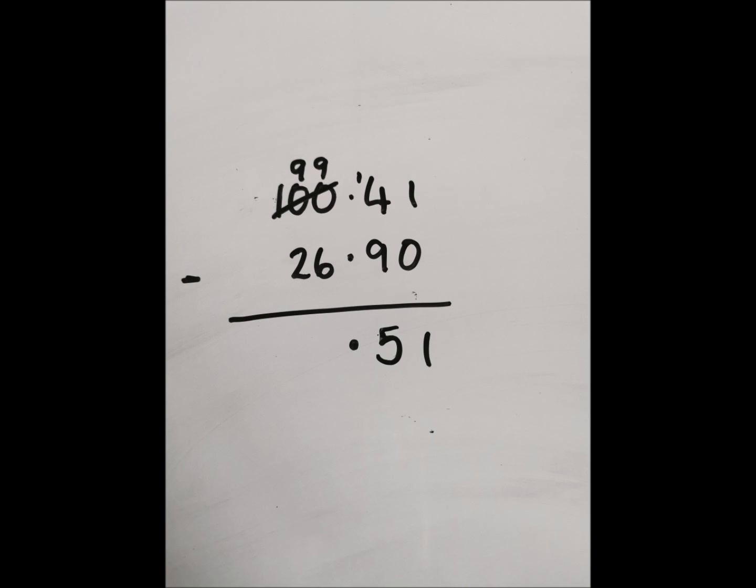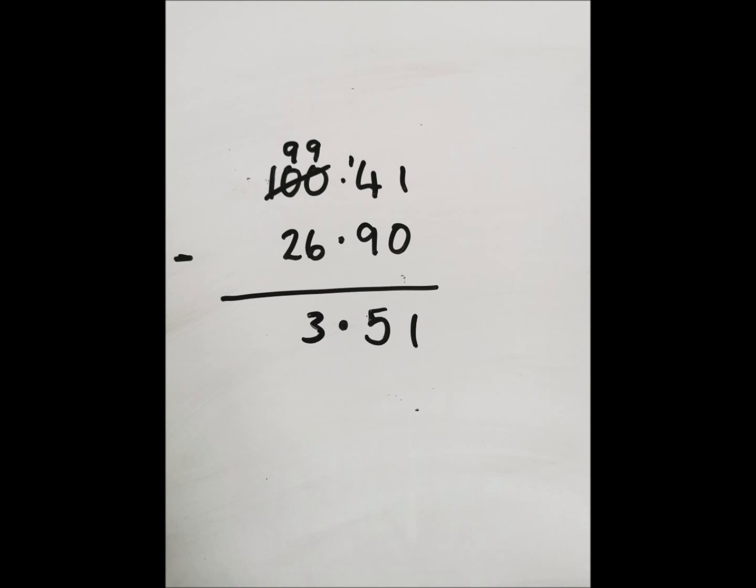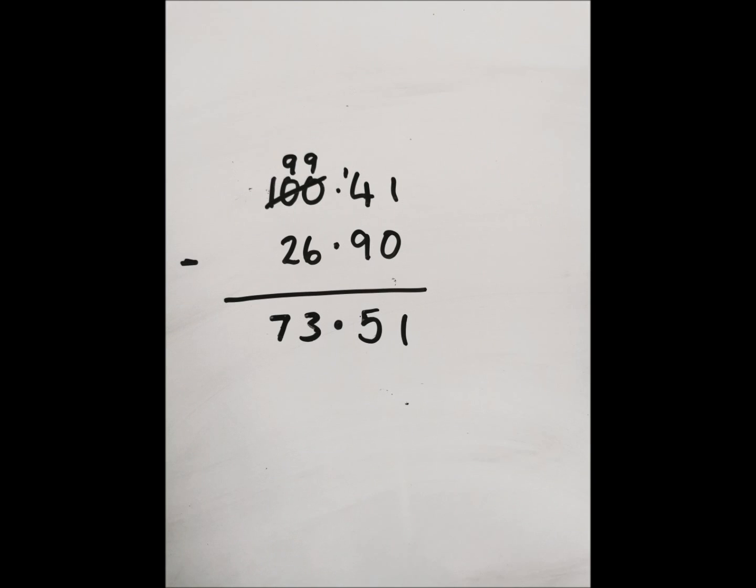And then when I get past the decimal point into the tens and units column, I've got 99 take away 26. So, I can do 9 take away 6, which is 3. And then 9 take away 2, which is 7, giving us 73.51.